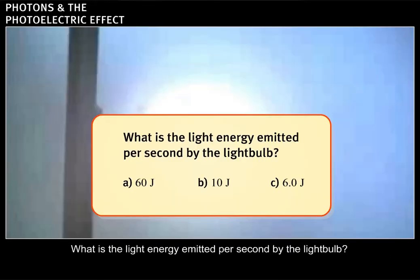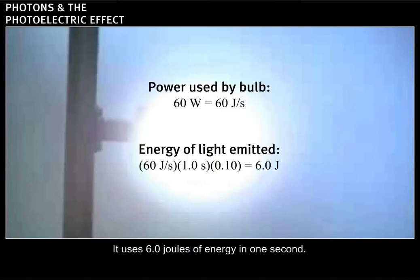What is the light energy emitted per second by the light bulb? Correct. It uses 6 joules of energy in one second.